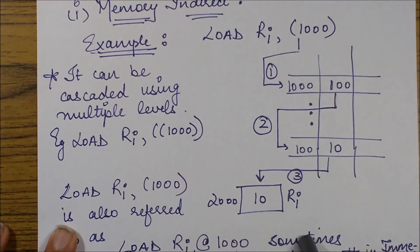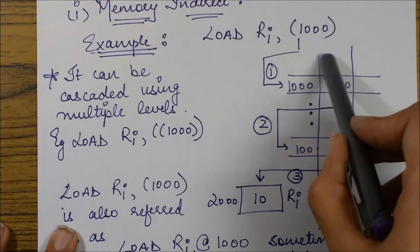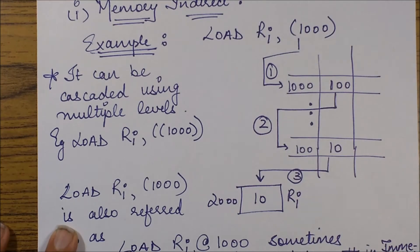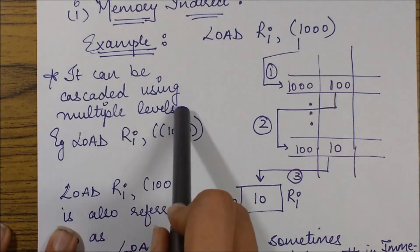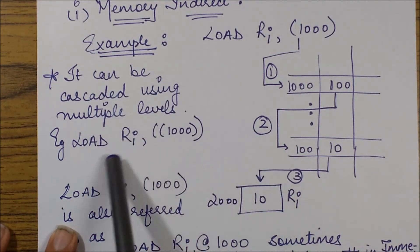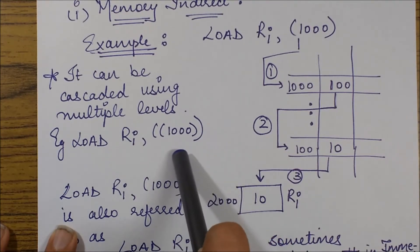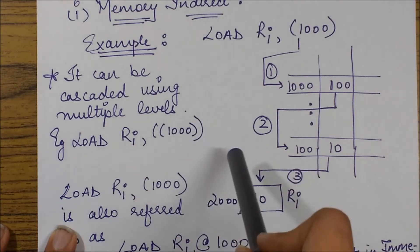So this is the manner the procedure works. So as you see, these curve braces basically represent the cascading and it can be cascaded using multiple levels. Like over here, if I see this, it has two curve braces.